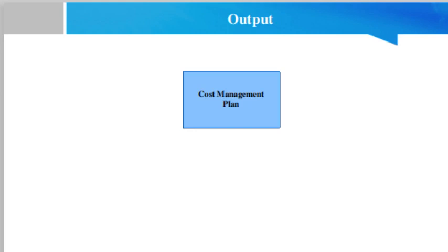The output of the Plan Cost Management process is the cost management plan, which is a component of the project management plan. It describes how the project cost will be planned, structured, and controlled. The cost management plan can establish the following: units of measure — each unit used in measurement such as staff hours, staff days or weeks for time measures, meters, liters, tons, kilometers, or cubic yards for quantity measures, or lump sum in currency form — as well as level of precision and level of accuracy.